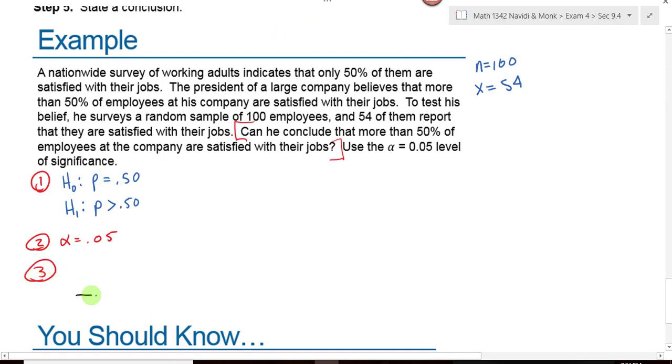Our picture will be a normal distribution. This is going to be a right tail test, so my critical value is going to be positive. This alpha level is off to the right, and that critical value is 1.645. Then we go to our calculator to find our test statistic and our p-value. Then we need to make a decision and draw a conclusion.